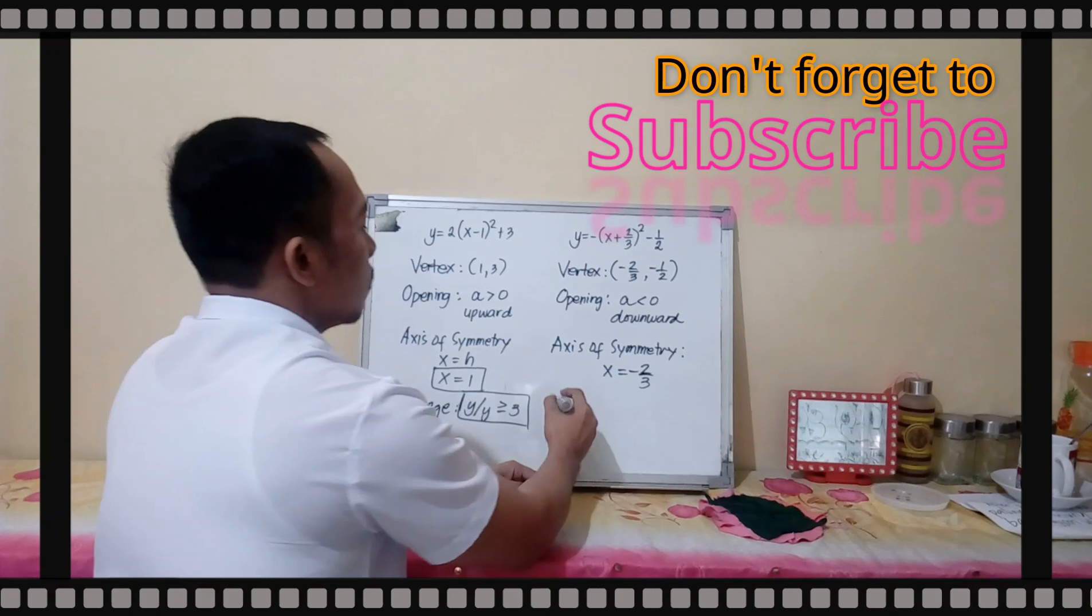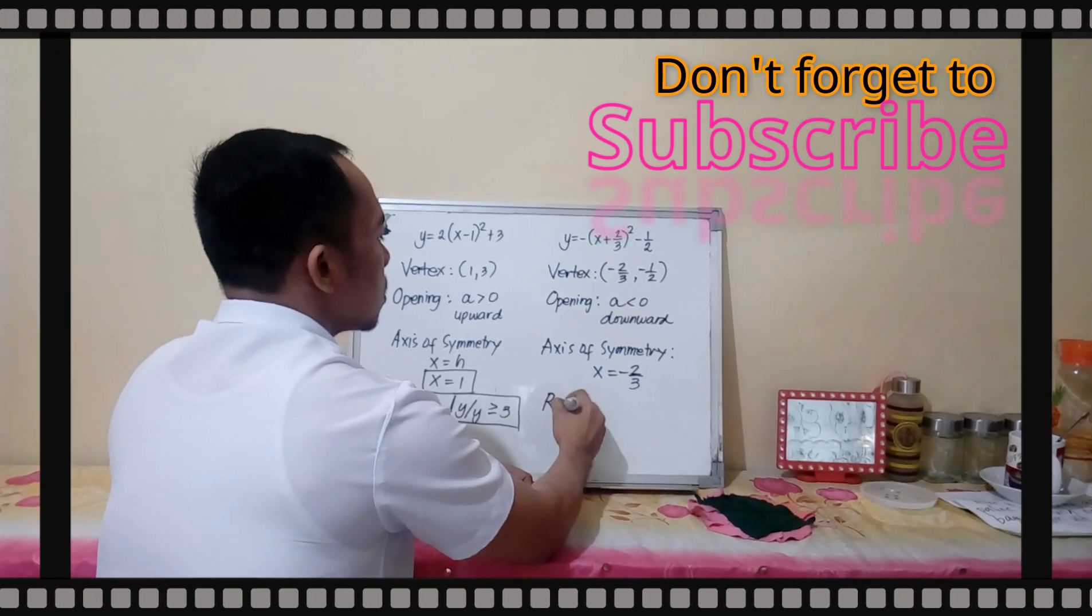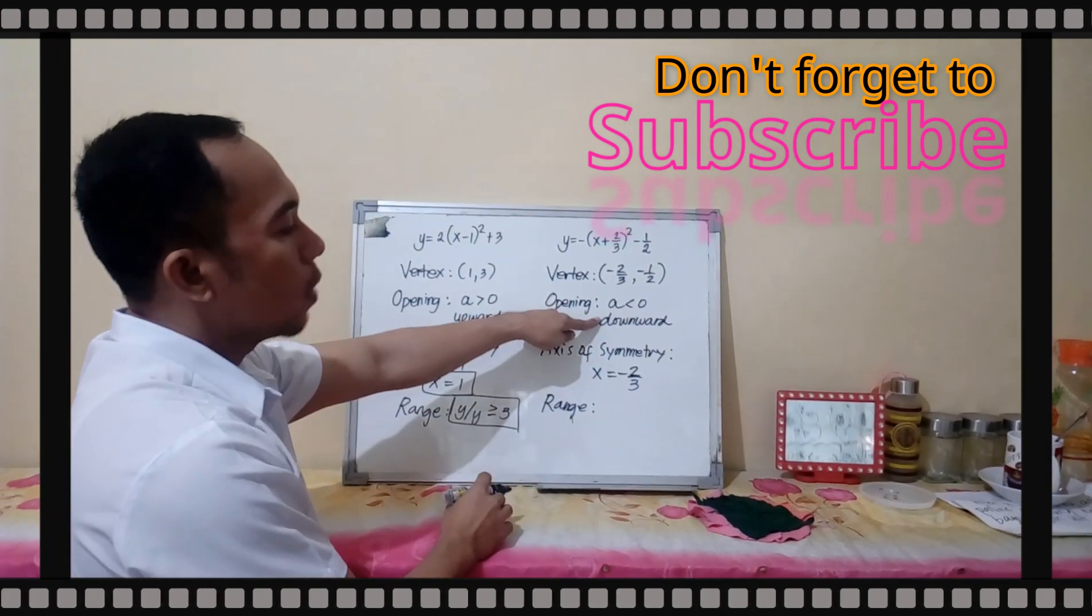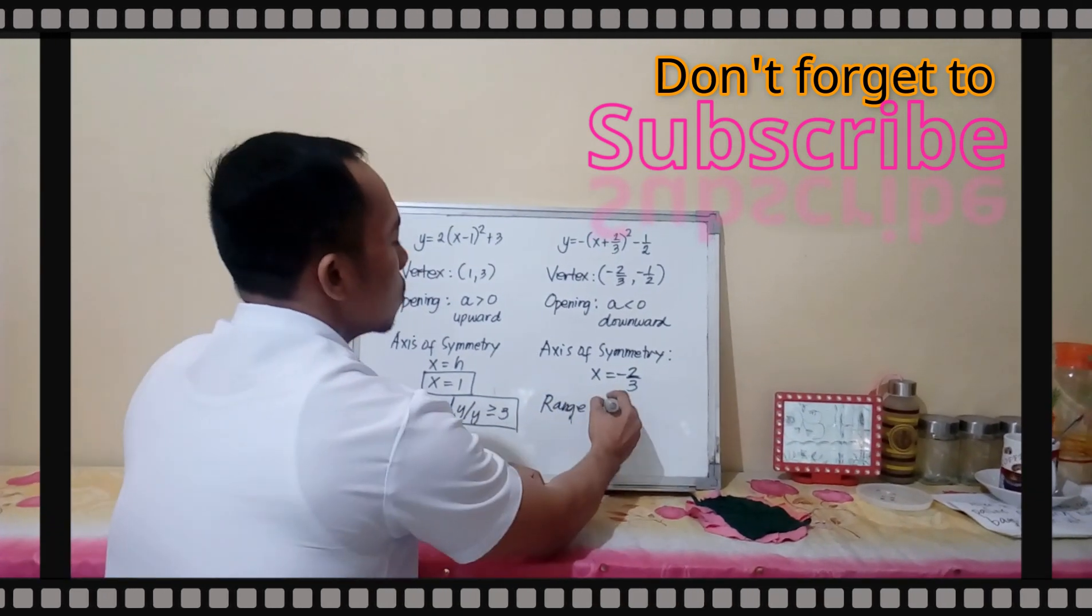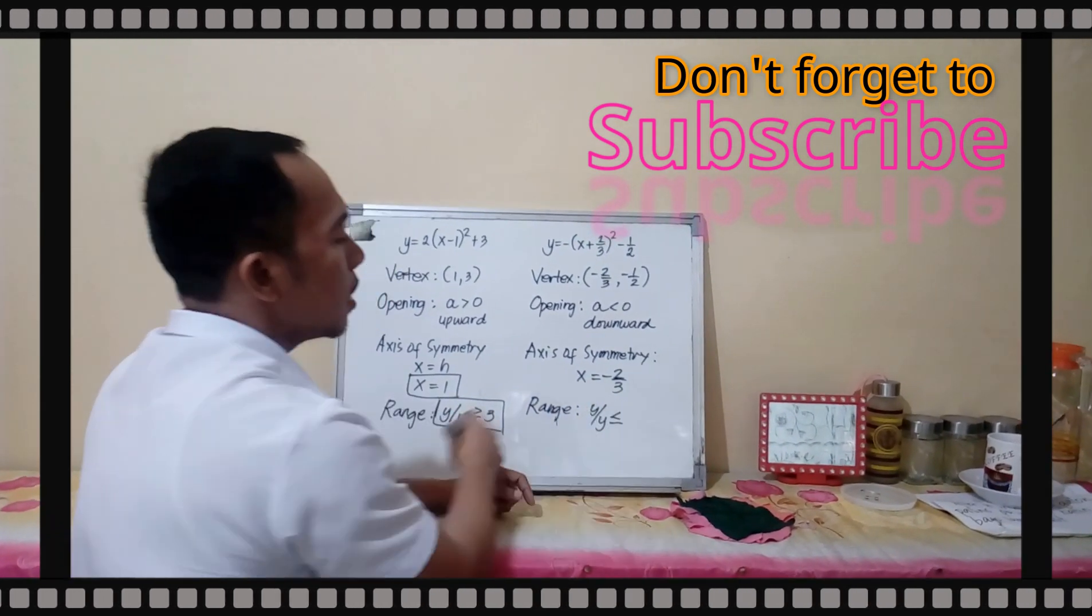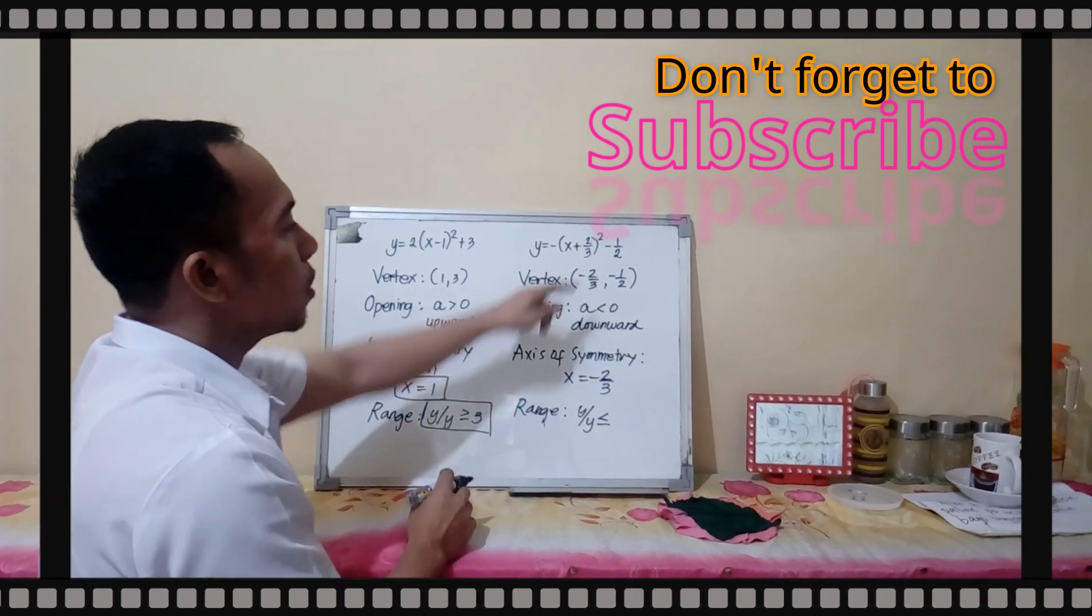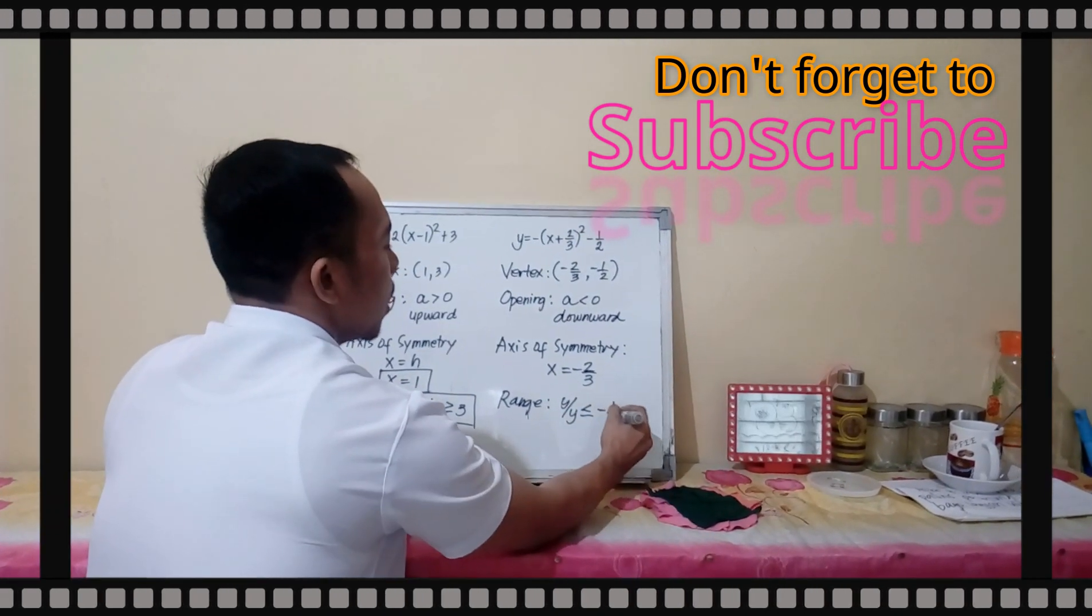And then, for our range, since it opens downward, our symbol is less than or equal to. We have y such that y is less than or equal to your k, which is negative 1.